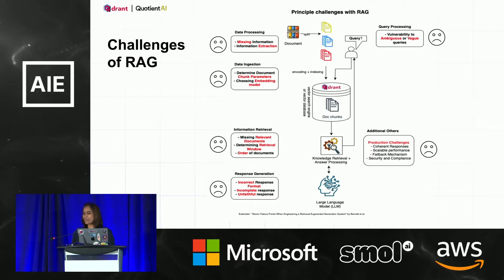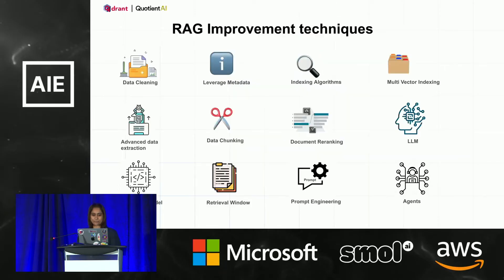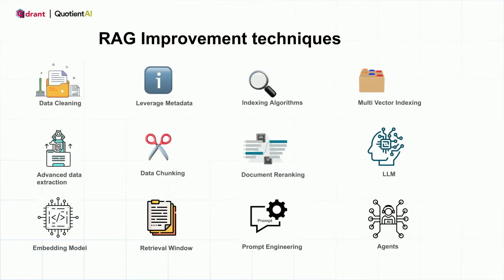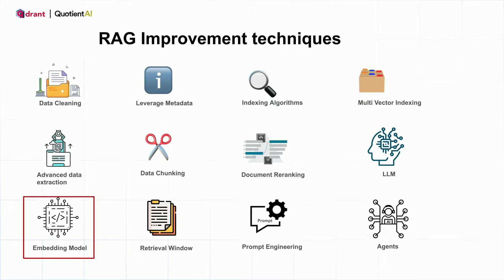So it looks like RAG isn't really a piece of cake after all. Fortunately, we have plenty of improvement techniques as well. Zooming into data quality — the foundation of great responses lies in the richness and accuracy of its information, which can be controlled through data cleaning and advanced data extraction methodologies. It is not a bad idea to use a general-purpose embedding model to begin with, but for added improvements, it would be good to use an embedding model that comprehends the terminologies of your domain.